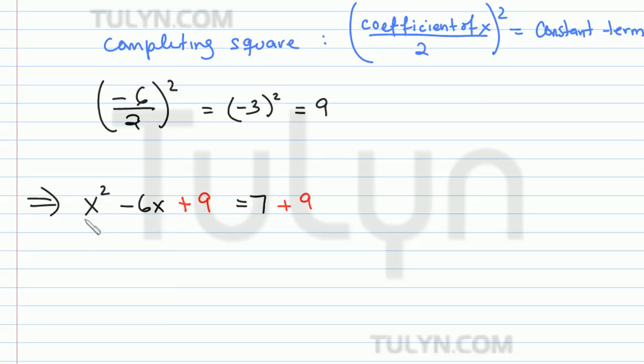So completing the square here, x squared minus 6x plus 9 factors into x minus 3 times x minus 3, which is x minus 3 squared. And then on the right side we have 16.